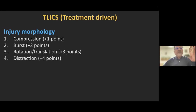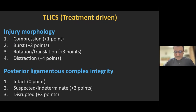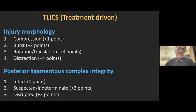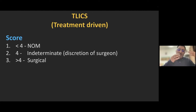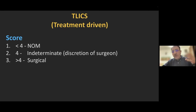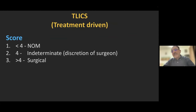TLICS was the first to incorporate the importance of the posterior tension band: if the posterior ligamentous complex is injured, that adds 3 points; if intact, 0 points; if indeterminate, 2 points. Totaling morphology plus PLC integrity gives a score. A score less than 4 means non-operative management; greater than 4 means surgical treatment because the spine is unstable. A score of exactly 4 leaves the choice to the surgeon. In the updated AO classification, compression injury is type A (A0–A4), with A0–A2 as compression fractures and A3–A4 as burst fractures.